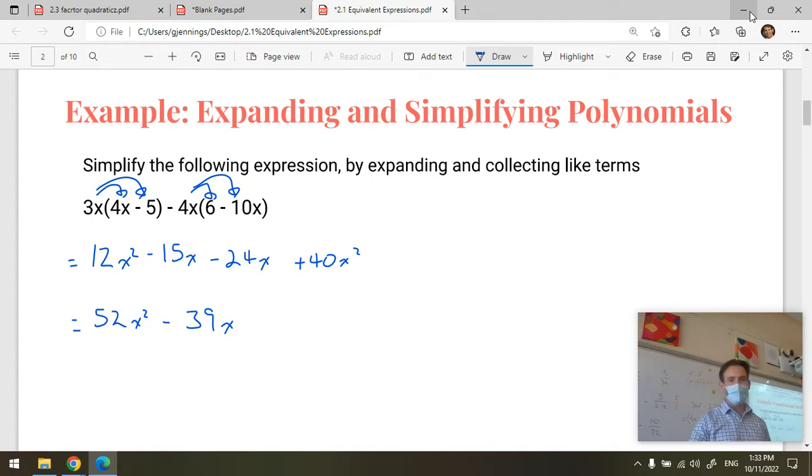Take negative 4x, multiply it by 6 to get negative 24x, and negative 4x times negative 10x to get positive 40x squared. And then just collect your like terms.